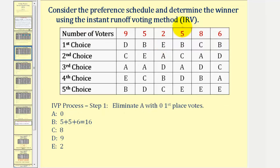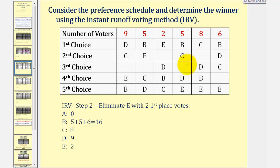Now to find the winner using the instant runoff method, we eliminate candidate A, since candidate A has 0 first choice votes. We can either cross off A or delete A from the table. Notice that by eliminating candidate A, we don't assign any first choice votes to any other candidates. So now we move along to the second step.